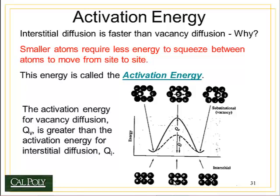In interstitial diffusion, the atom also has to move past two other atoms, but because the interstitial impurity atom is so much smaller, it creates much less lattice distortion. Because of the lower amount of lattice distortion, the barrier to diffusion is much lower, so the activation energy for interstitial diffusion is also lower — the height of the wall is always lower in interstitial diffusion than it is in vacancy diffusion.